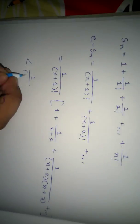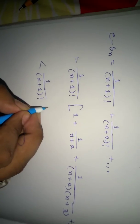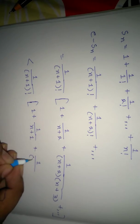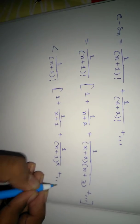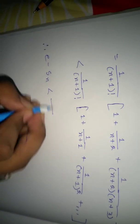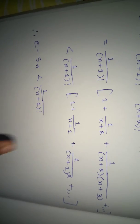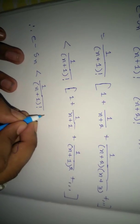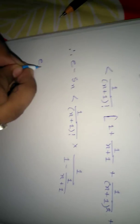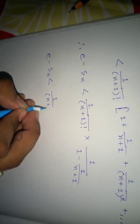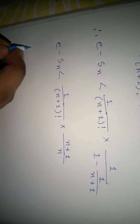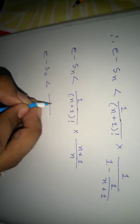And it is less than 1/(n+1)! times the infinite geometric series with value 1/(1 - 1/(n+1)), which gives e minus Sn less than 1/(n+1)! times (n+1)/n.